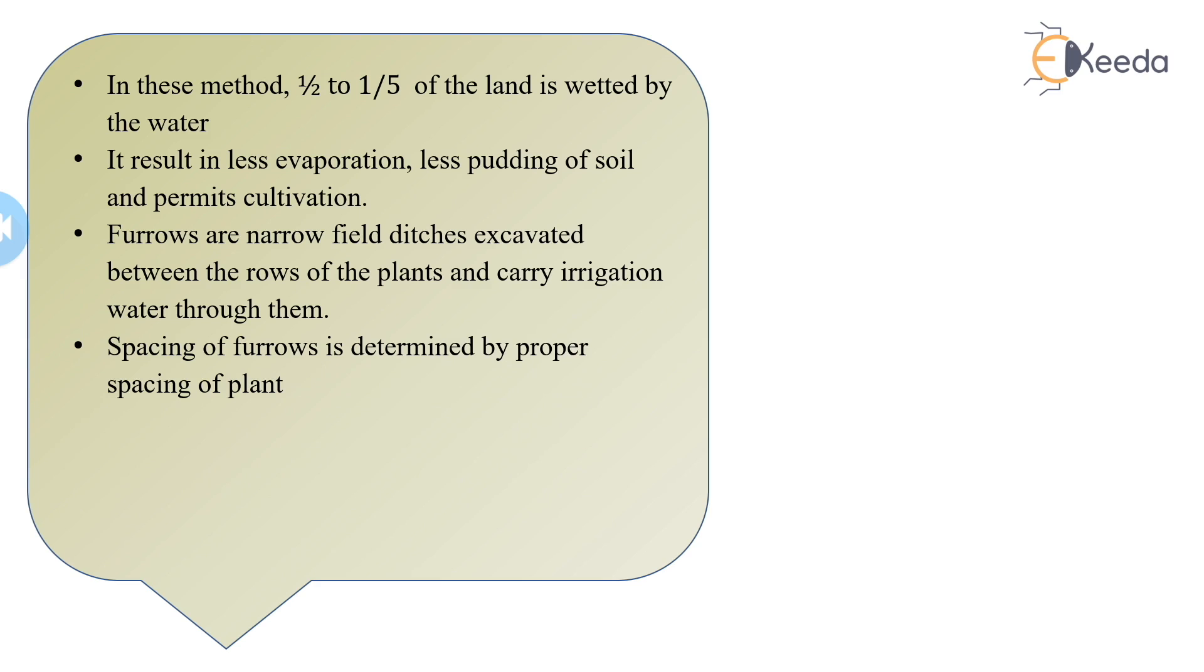The general slope provided for furrows may vary from 0.2 to 6%. This method is generally used for row crops like maize, jowar, sugarcane, cotton, tobacco, groundnuts, potatoes, etc.